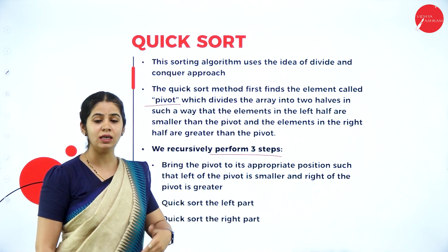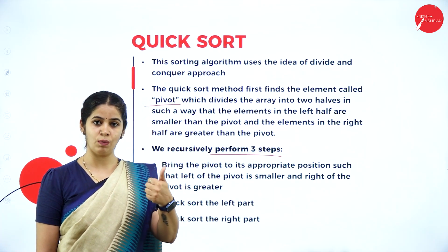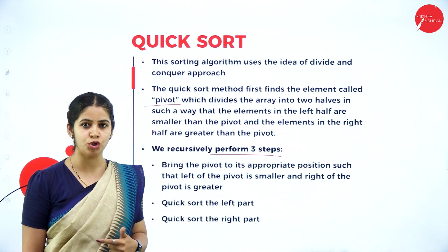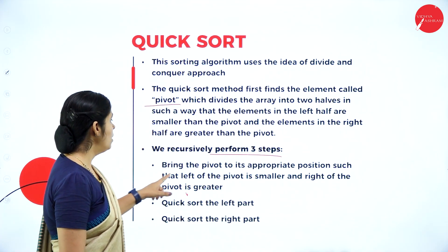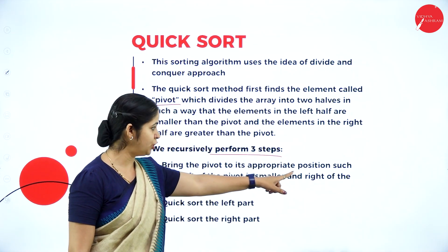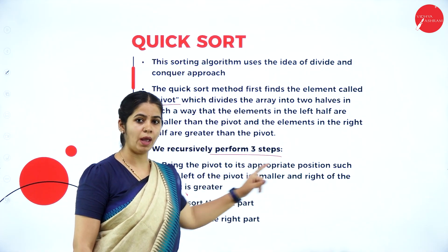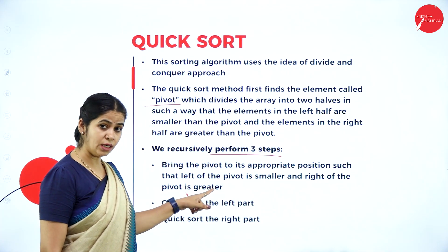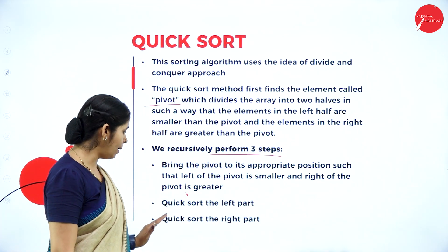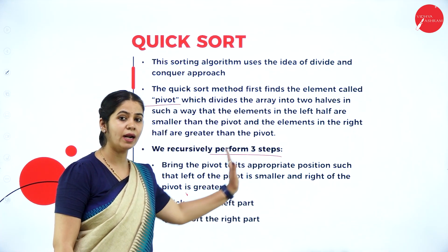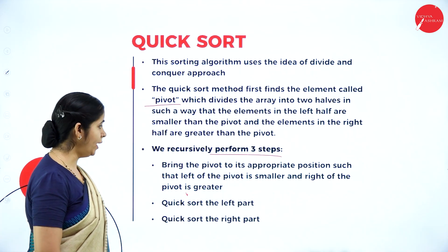This is a recursive function. We are applying two concepts: one is the dividing concept and one is recursion. Bring the pivot element to its appropriate position such that the left of the pivot element has smaller numbers and the right of the pivot element has greater numbers. Then apply the quick sort on the left part of the array and on the right part of the array. We keep repeating until we get the sorted array.